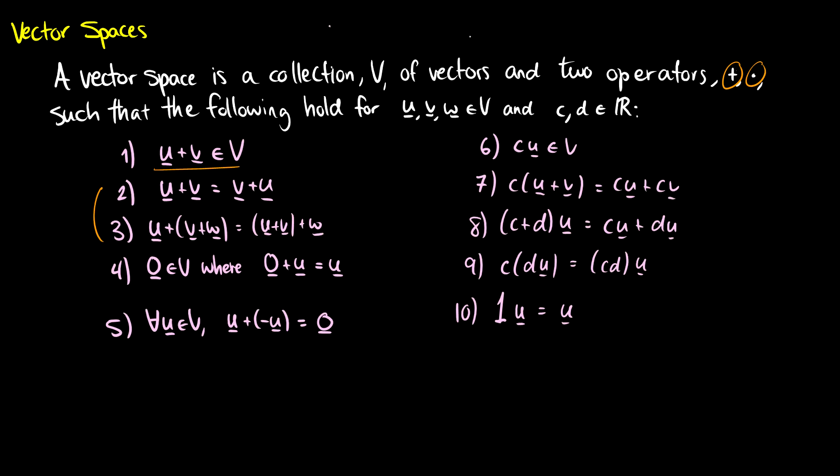We need to have a zero vector. We need to have an inverse for every vector, so if we have a vector u, we need an inverse negative u that gets back to zero. We should always be able to get back to that zero vector.